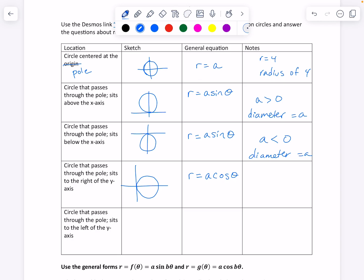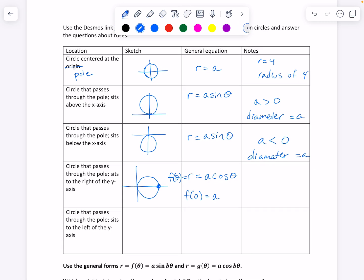I don't know that I'm drawing those in the correct order that they happen. But this is where r equals a sine theta, where a was less than 0. And once again, we have the diameter equals a. Okay, a circle that passes through the pole sits to the right of the y-axis. Okay, let's come back to Desmos. Turn this one off. Let's turn this one on. Oh, okay, let's make that so we can see it.